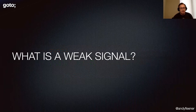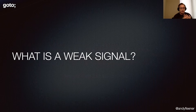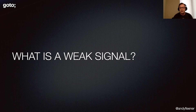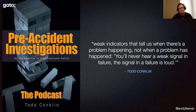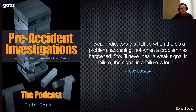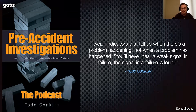The section of my chapter is about weak signals. We understand signs as a natural way to give notice; signals are a more dynamic way to convey information. So what is a weak signal? This is where Todd Conklin comes in. Weak signals are weak indicators that tell us when there's a problem happening — not when a problem has happened. You'll never hear a weak signal in failure; a signal in failure is loud. That's from a safety moment in Todd Conklin's Pre-Accident Investigations podcast.